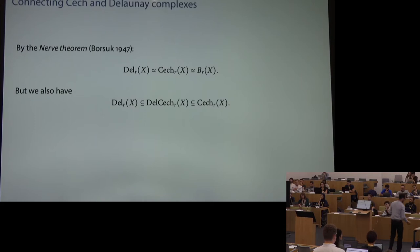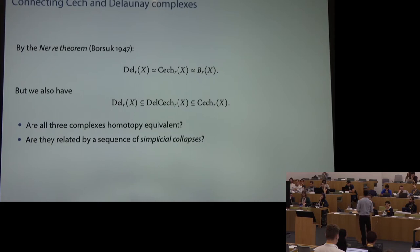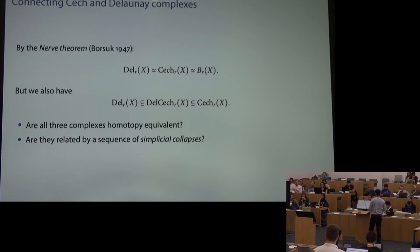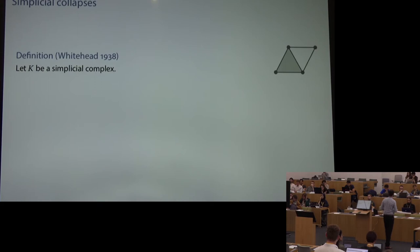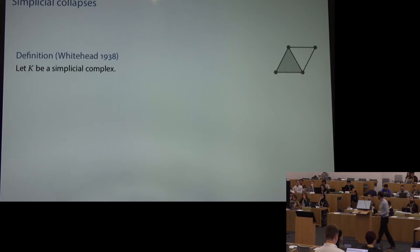The question we're going to look into: these complexes are related through simplicial collapses. You throw away pairs of simplices from the Čech complex — all the high-dimensional ones you don't need — and end up at the Delaunay-Čech complex, which you can further shrink to the Delaunay complex. This is an old notion introduced by Whitehead.